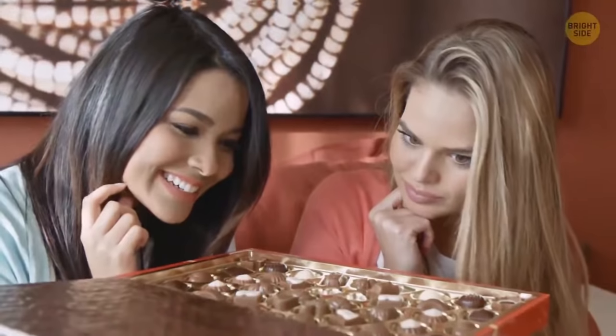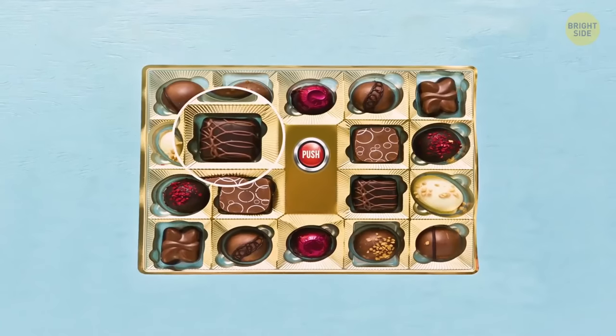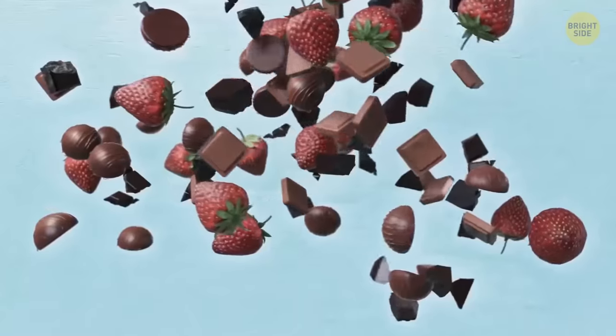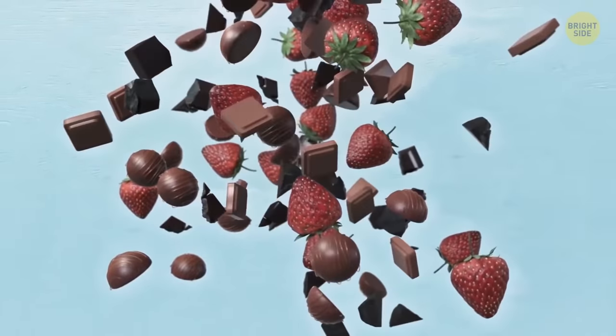If you ever had problems with popping chocolates from the box, look at those little holes around them. They're there to help you. If you push a hole right next to the candy, it'll jump out easily.